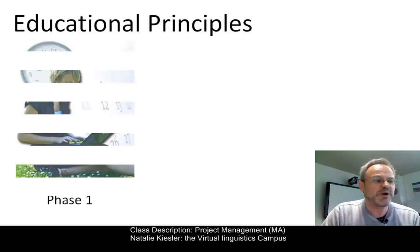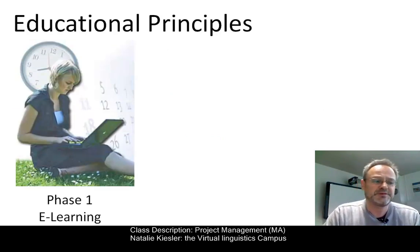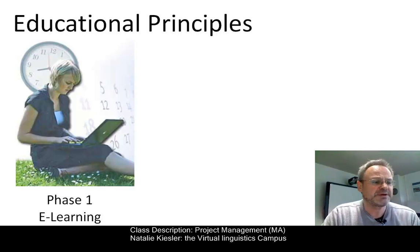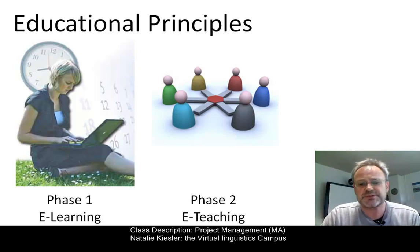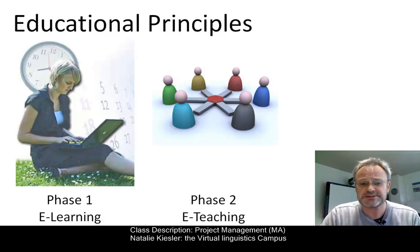In phase one, you are now the autonomous learner. In phase two, we will meet in class, where classical or frontal teaching is now out. The central teaching method is that of a cooperative interaction between instructor and students. The content you are given is multimodal and involves all sorts of channels.